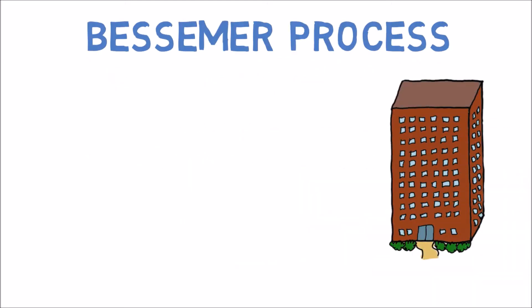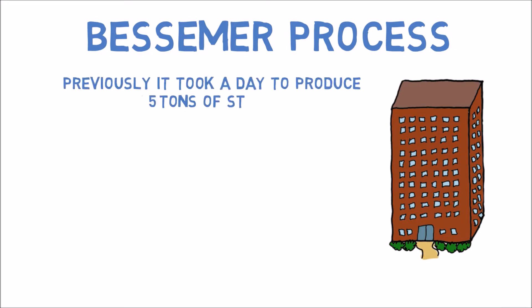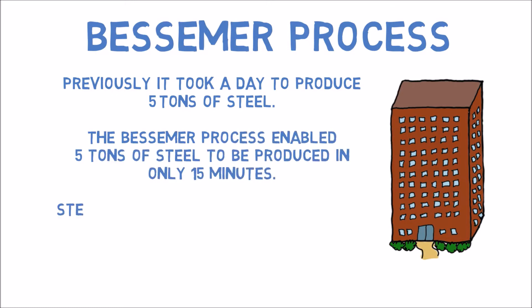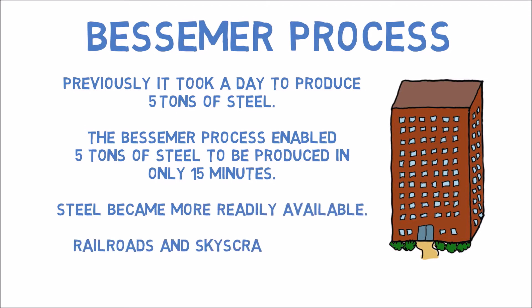Bessemer Process. Previously, it took a day to produce 5 tons of steel. The Bessemer process enabled 5 tons of steel to be produced in only 15 minutes. Steel became more readily available, and railroads and skyscrapers began to appear across the country.